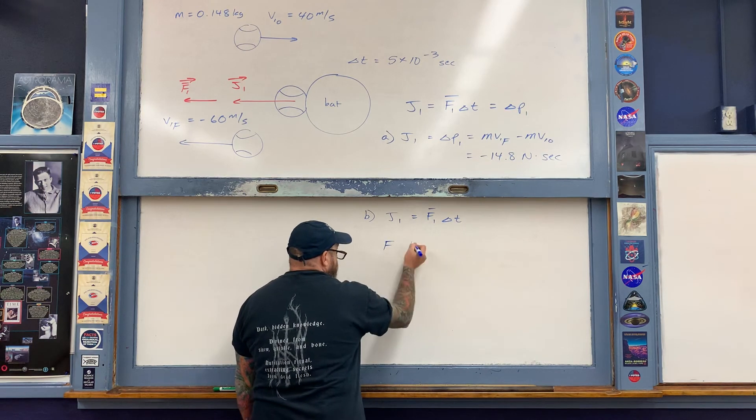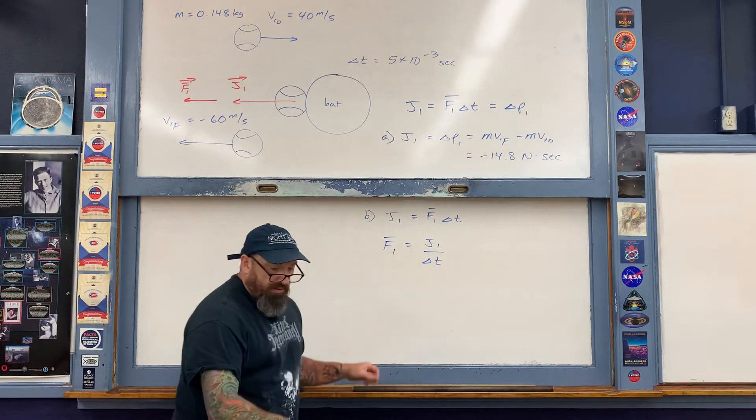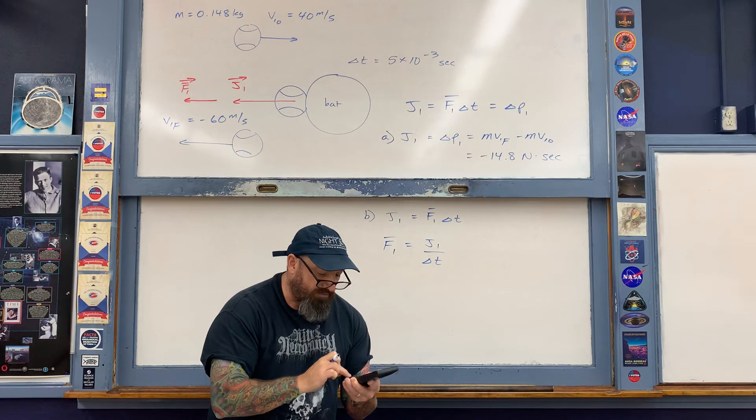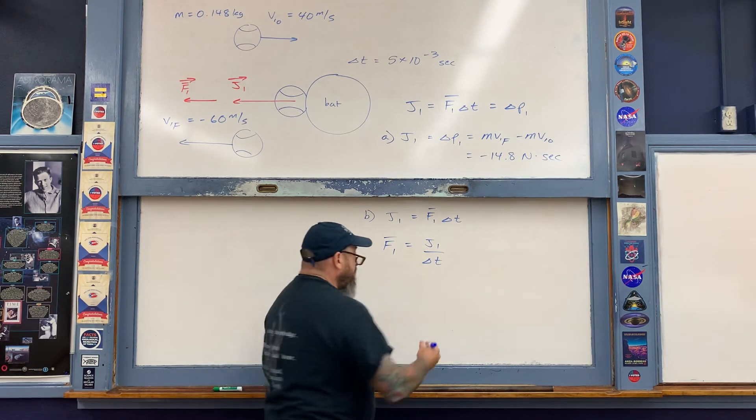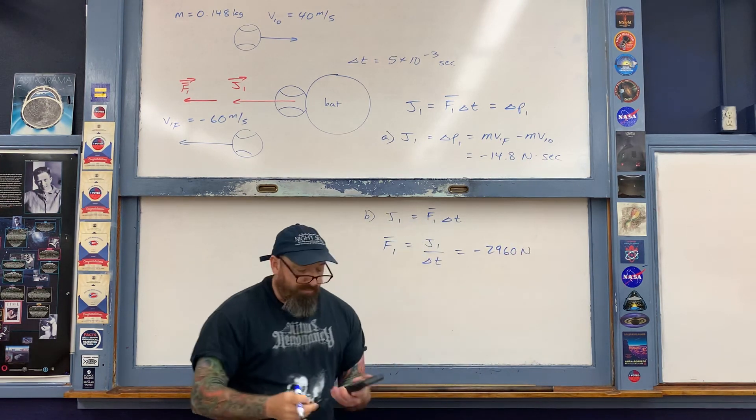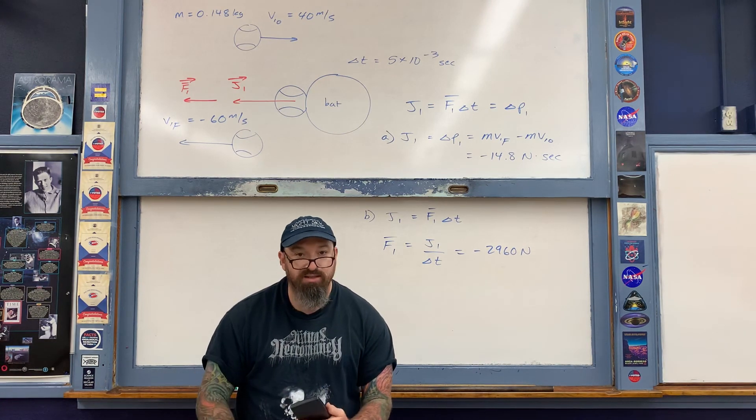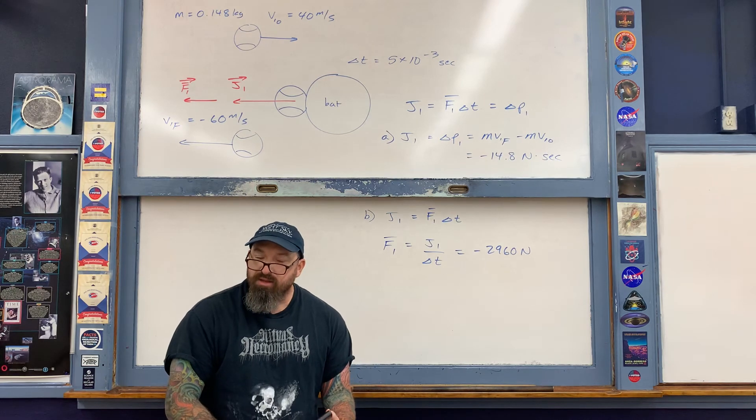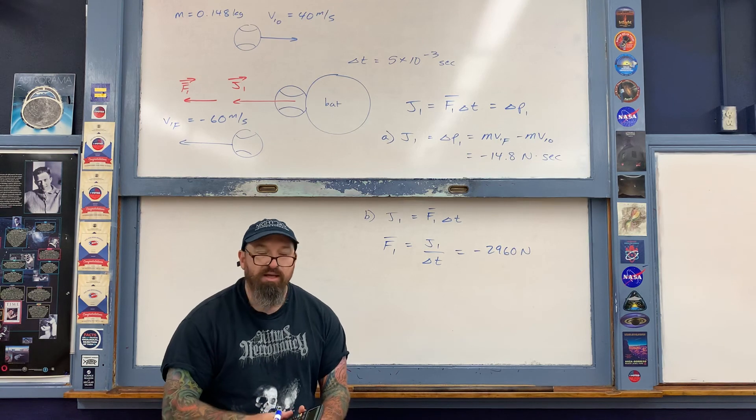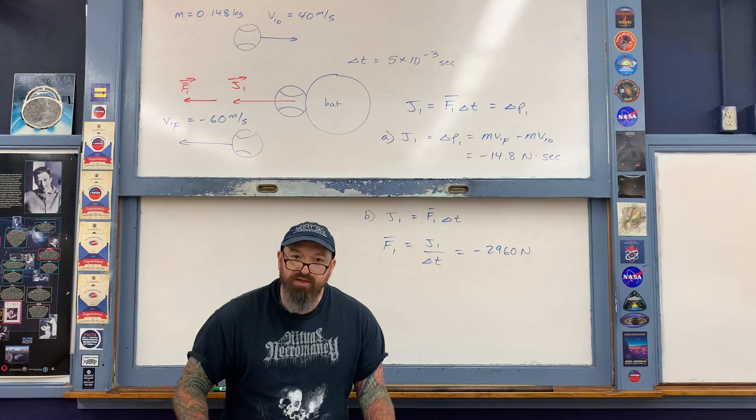Let's finish up. The average force exerted upon the ball is the impulse divided by the time interval. Take the impulse in newton seconds and divide by 5 times 10 to the minus 3 seconds. You end up with a fair amount of force: negative 2960 newtons. That's a realistic number. To give you an idea of how big that is, it's equivalent to about 665 pounds of force. That's the amount of force exerted by the baseball bat upon the baseball. Yes, it is an average quantity, but describing it as an average is perfectly fine. That concludes this brief look at impulse.